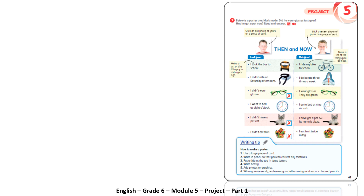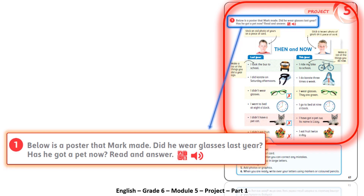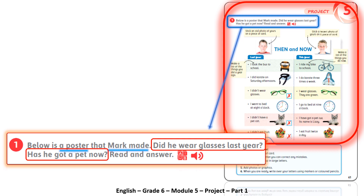On this page of the student's book we can find exercise one. Let's read the instructions together: below is a poster that Mark made. The questions are: did he wear glasses last year, and has he got a pet now? The key words in these two questions are 'glasses' in the first question and 'a pet' in the second. To find the answers we look for these words or pictures that represent them.